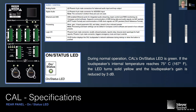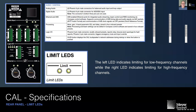The on-status LED glows green during normal operation. Should the internal temperature exceed 75°C, that LED turns solid yellow and the loudspeaker's gain is reduced by 3dB until the temperature drops below 75°C again. There are also limit LEDs: the left LED shows the status of the low-frequency channels, and the right LED shows the status of the high-frequency channels. If either is blinking, limiting has been activated.